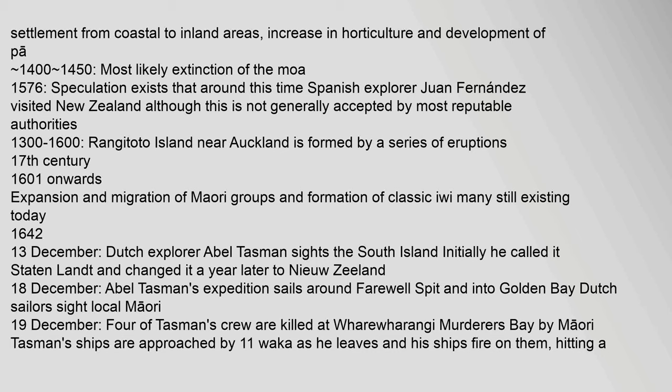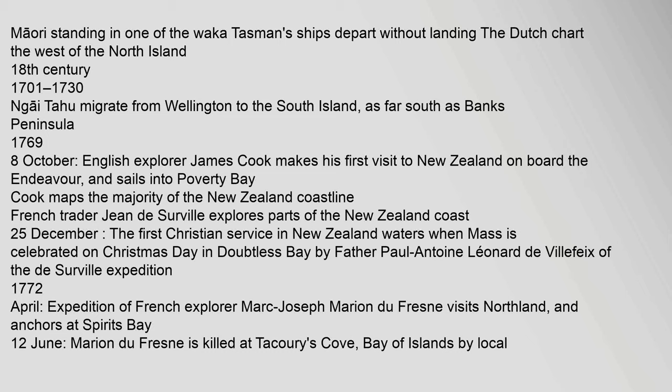18 December: Abel Tasman's expedition sails around Farewell Spit and into Golden Bay; Dutch sailors sight local Maori. 19 December: Four of Tasman's crew are killed at Taitarangi (Murderers Bay) by Maori. Tasman's ships are approached by eleven waka as he leaves and his ships fire on them, hitting a Maori standing in one of the waka. Tasman's ships depart without landing; the Dutch chart the west of the North Island.